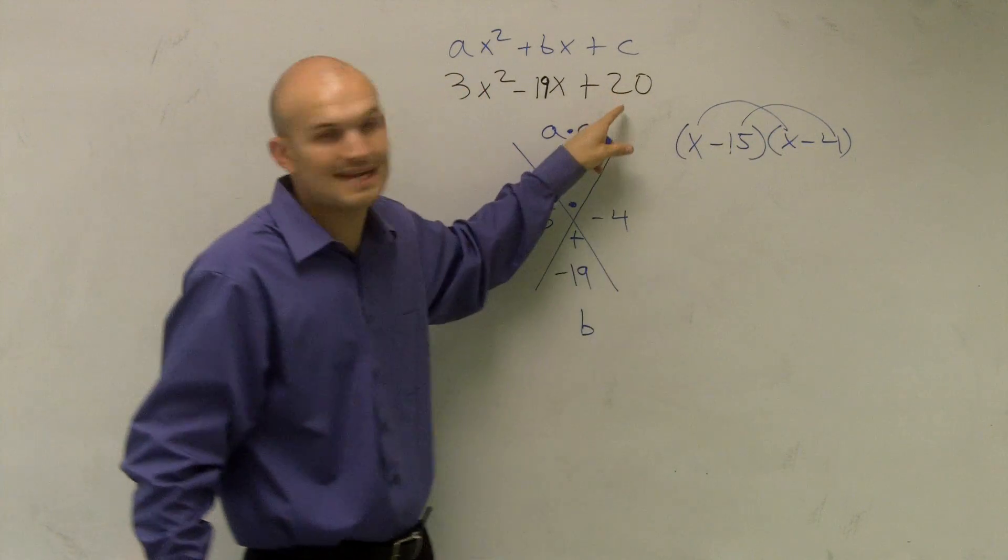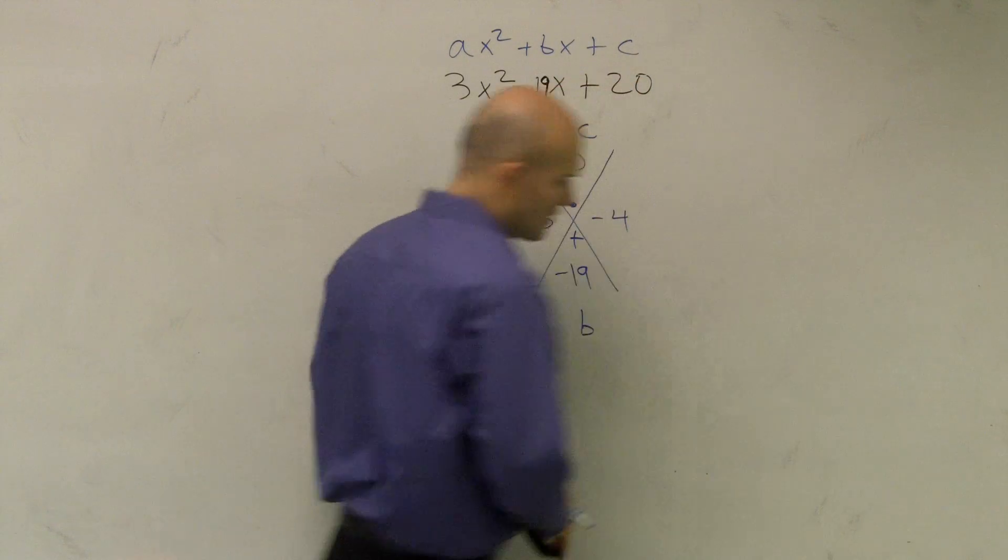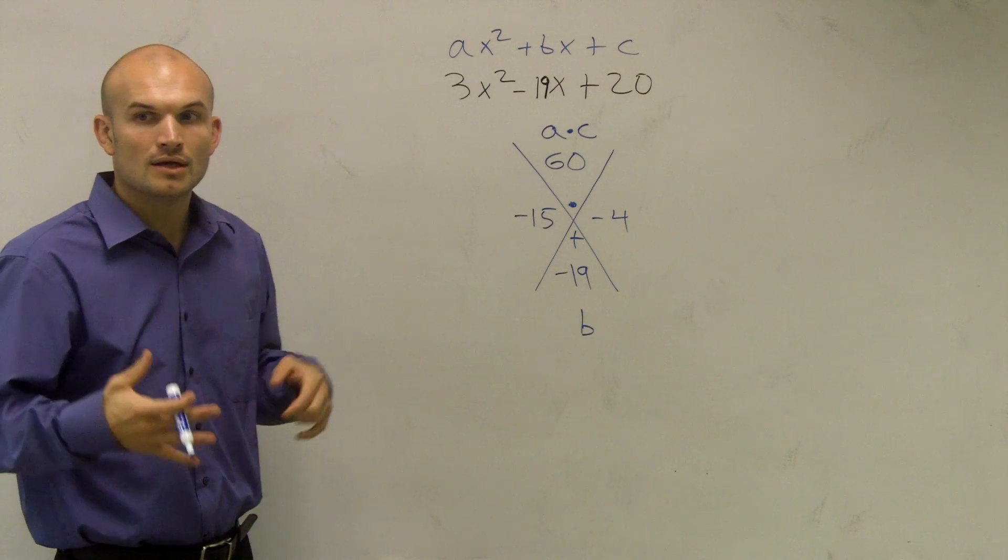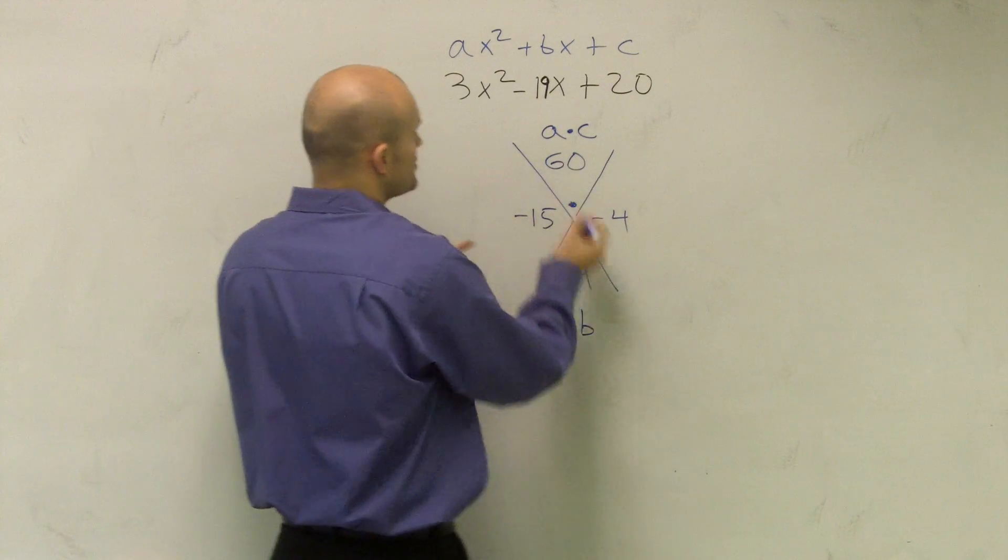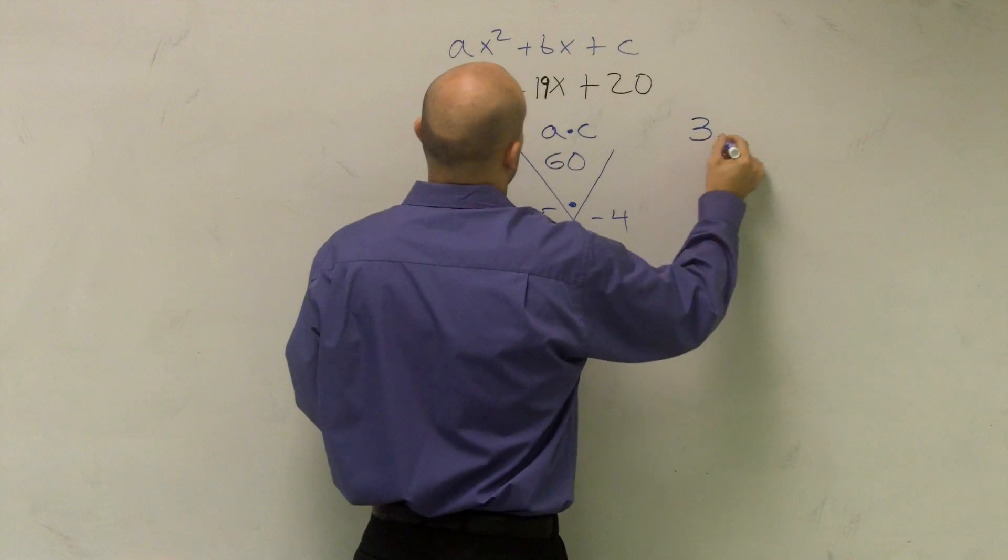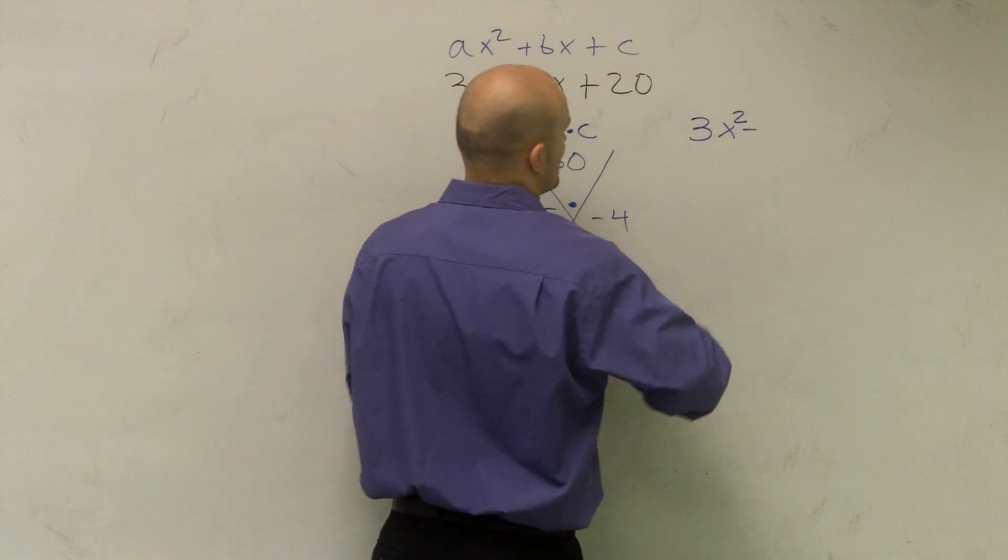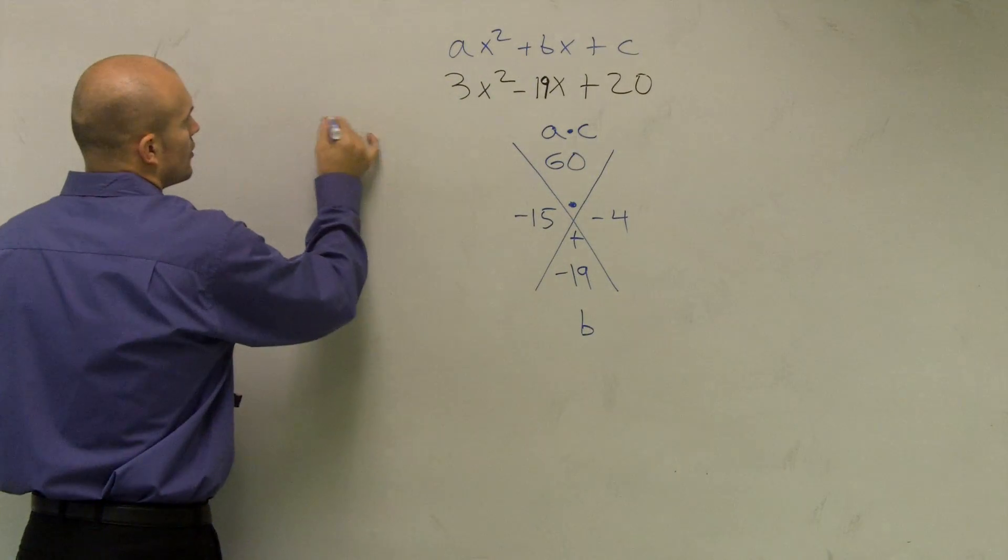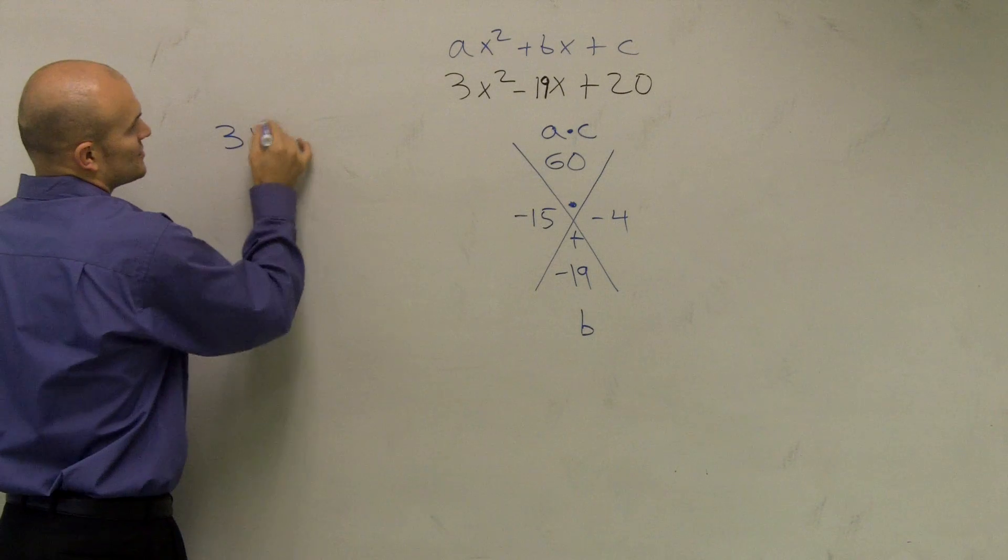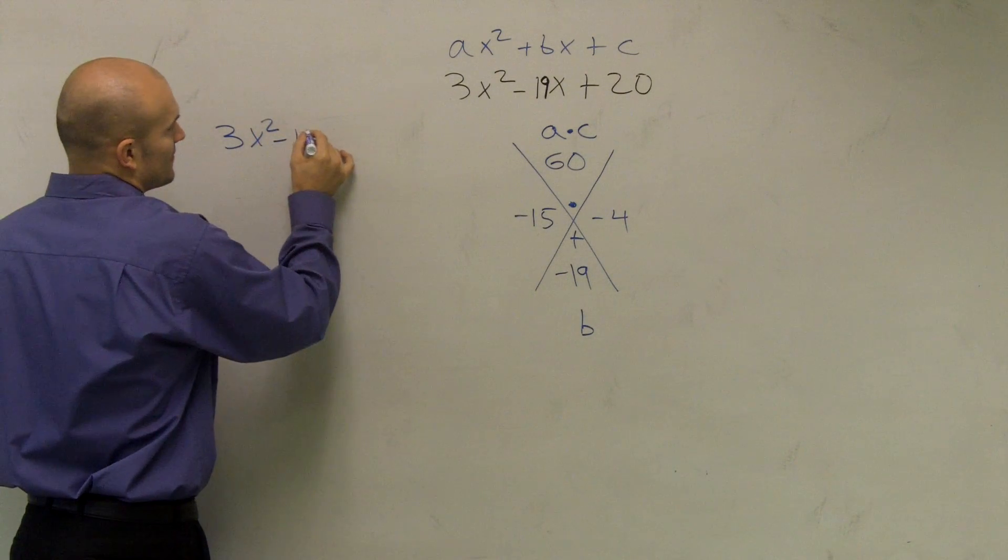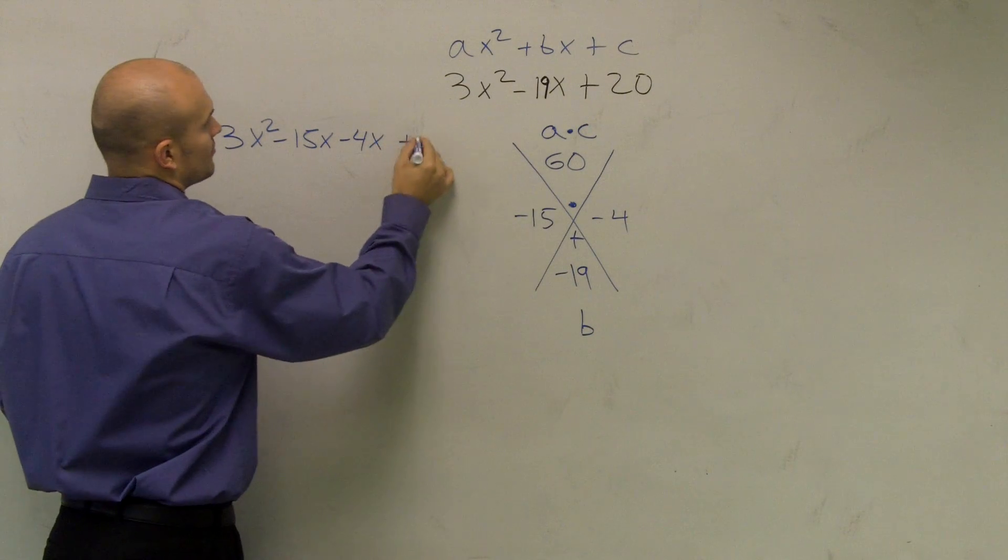Negative 15 times negative 4 does not give you 20. So what we need to do is we need to write this in a way that is still going to keep that mathematical equivalence. So what I'm going to do is I'm going to now write 3x squared minus 15x minus 4x plus 20.